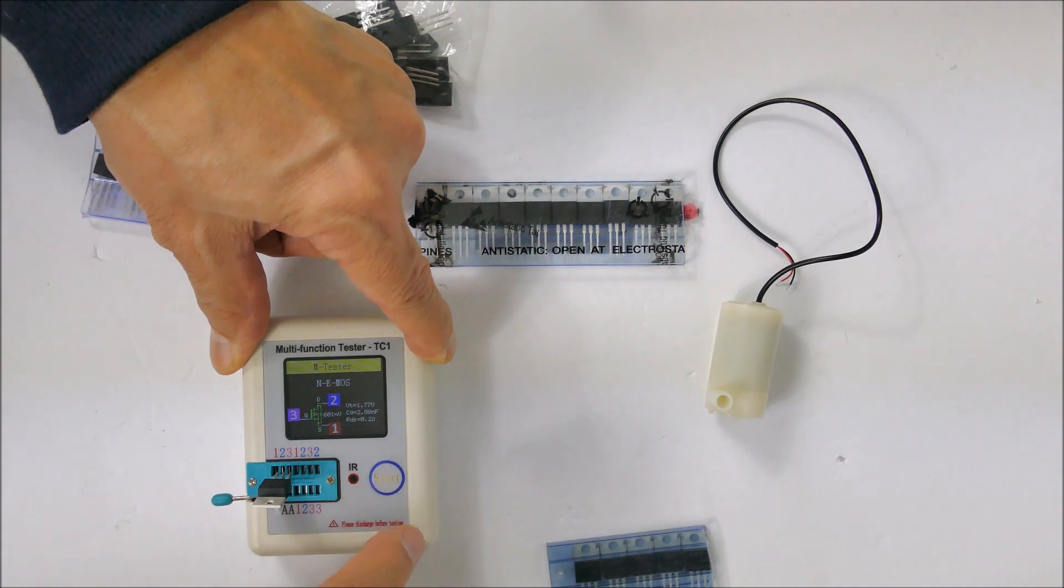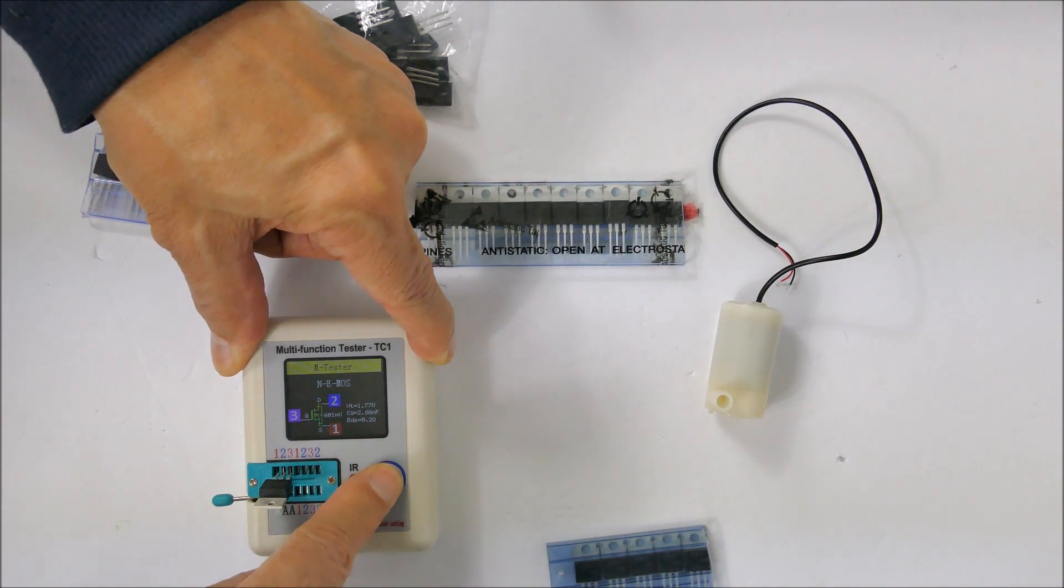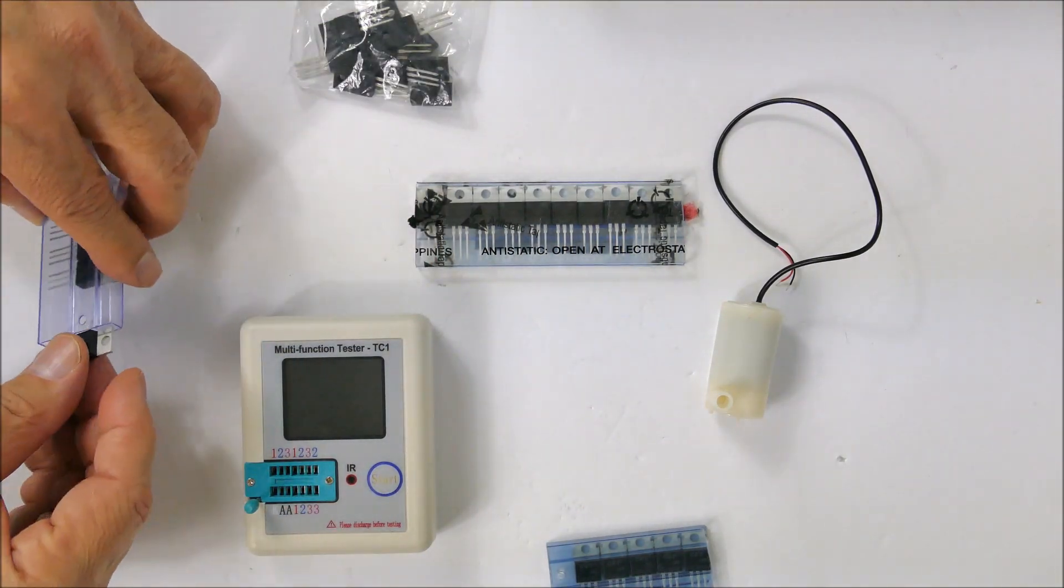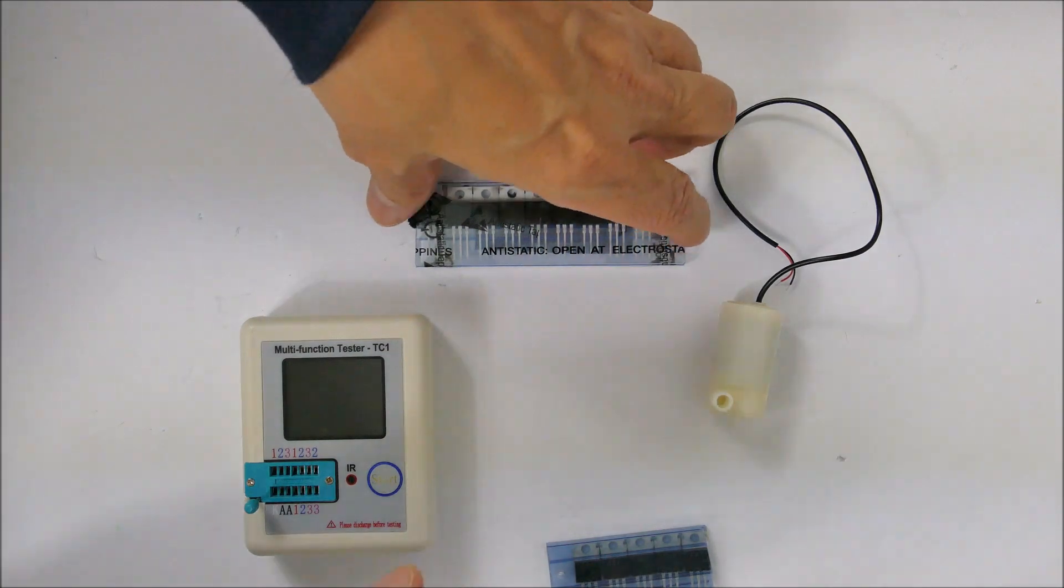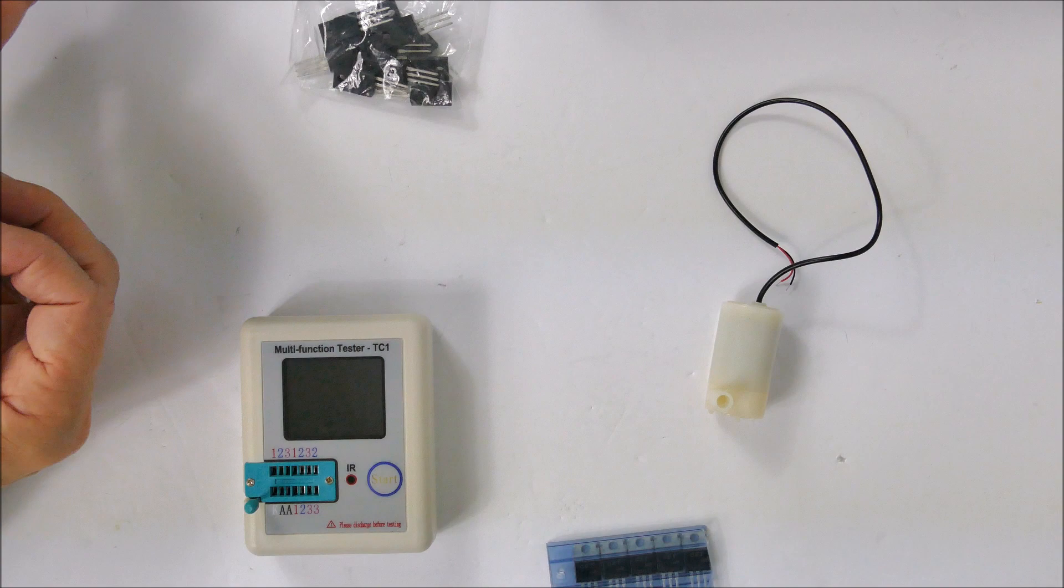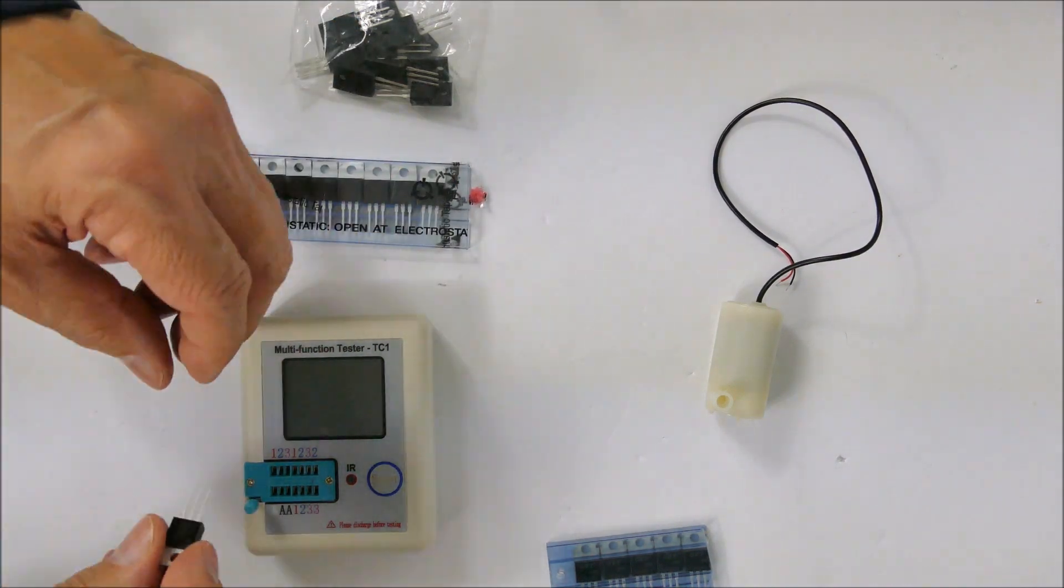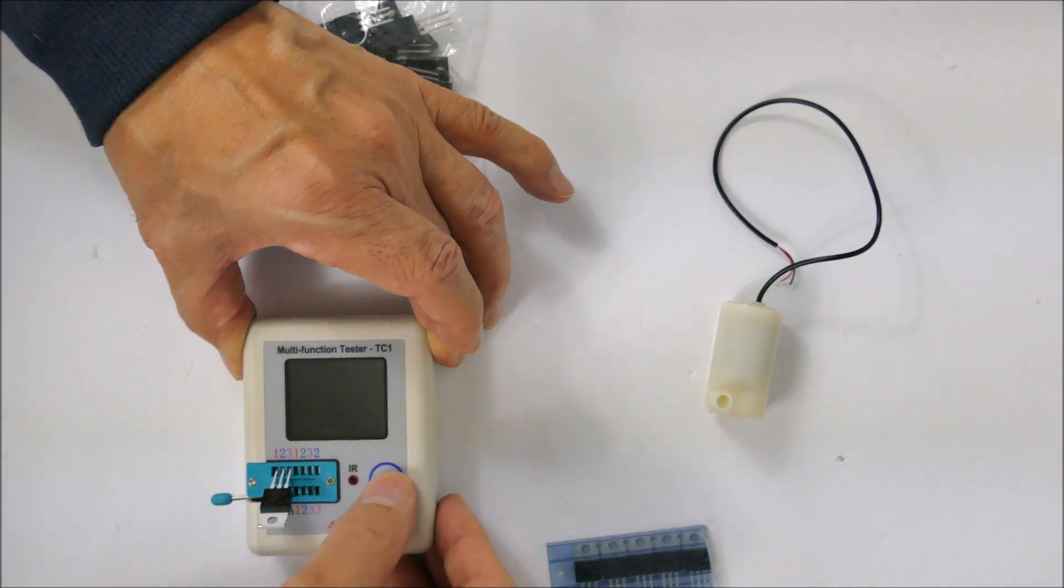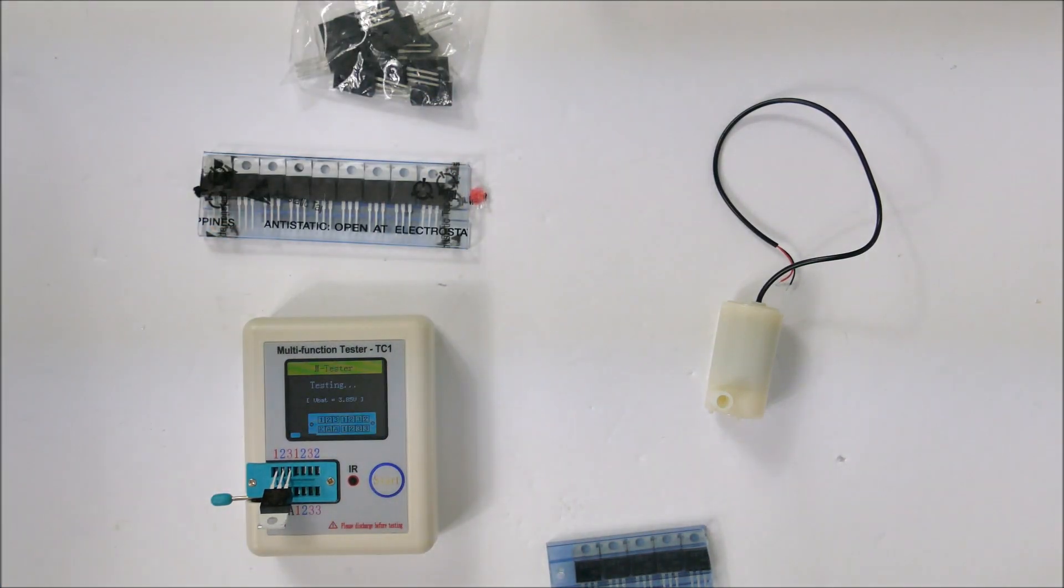And one more batch here. These I actually have a datasheet for and I just want to confirm that they're good to go. Again, an N-channel MOSFET, 1.85 volt threshold for the gate turn-on and the on-resistance is 0.2 ohms. So again, that will work just great for this aquarium pump.